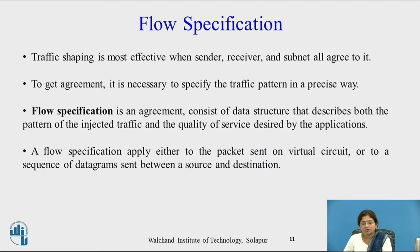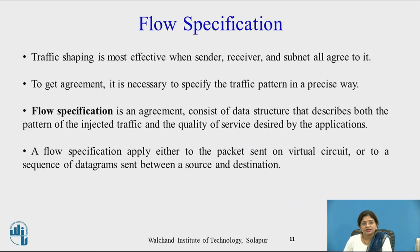Now let us see another important topic: flow specification. Traffic shaping is most effective when the sender, receiver, and the subnet all agree to it. To reach this agreement, it is necessary to specify the traffic pattern in a precise way. The flow specification is an agreement consisting of a data structure that describes both the pattern of injected traffic and the quality of service desired by the application. A flow specification applies either to packets sent on a virtual circuit or to a sequence of datagrams sent between source and destination.